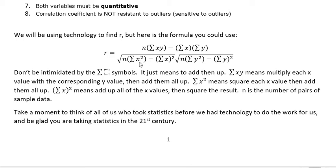I want to point out that this one on the bottom says take the x value, square it, and then add all those squared x values up. But this over here says add up all the x values, and once you've added them all up, then square that value. Those mean two different things. Be careful of that. As you think about all the work it would take to do this, think about all of us who had to take statistics before we had technology, and be glad you're taking statistics in the 21st century.